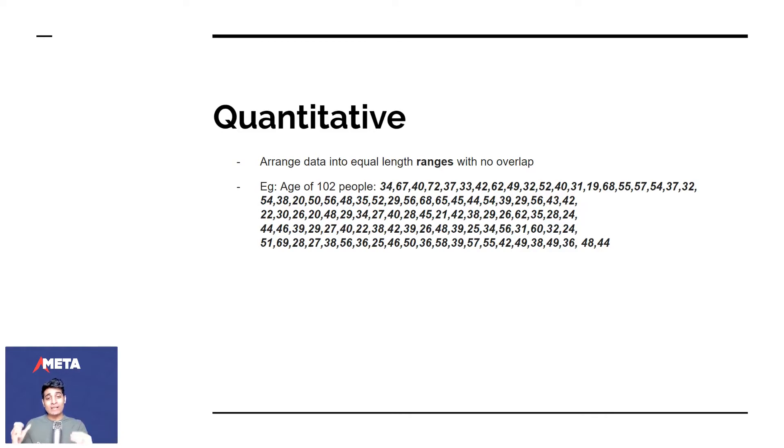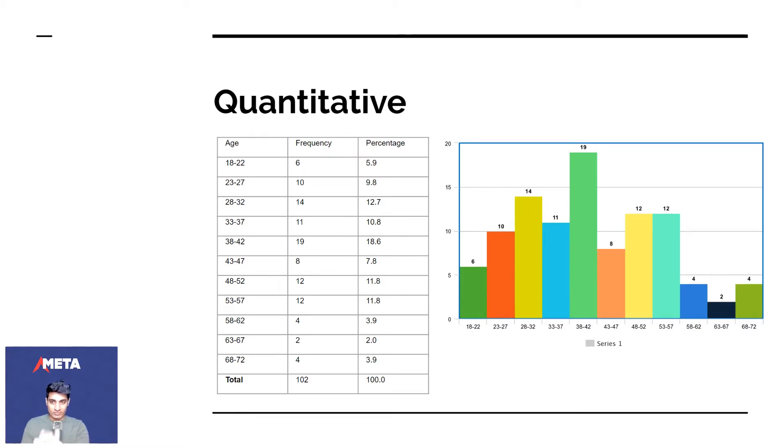So quantitative basically means you arrange data into equal length ranges. The length ranges must be equal with no overlap. Two conditions: equal length ranges, no overlap. So if you have the age of 102 people, 34, 67, 40, 72, 37, these are all ages of people. Instead of you saying there are five people who are 33 here or six people who are 62 years old, you can make ranges because that's a better way to study this. So we make ranges, equal ranges, just 18 to 22, that's 5, that's a range of 5 people. That's 18, 19, 20, 21, 22. And you split the entire thing. You say the least age is 18 and the most age is 72, so that will be our range. And you say 18 to 22, the frequency was 6. And you do the entire thing, you total it up, the frequency comes up, the total frequency comes up to 102, and then you find out the percentage. And this is represented in adjacent touching bar graphs. And you can see it there, and you can create this on metachart too.